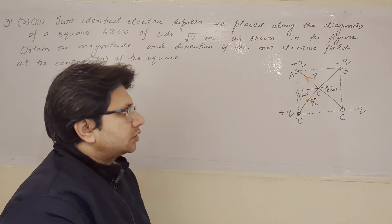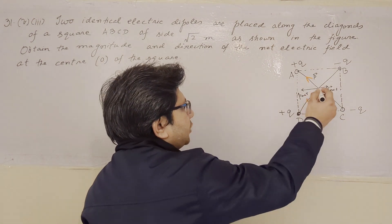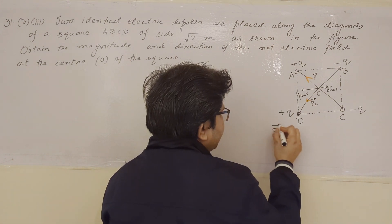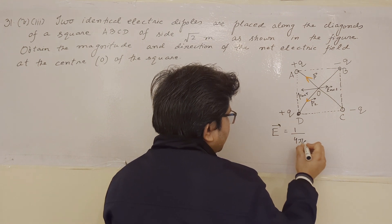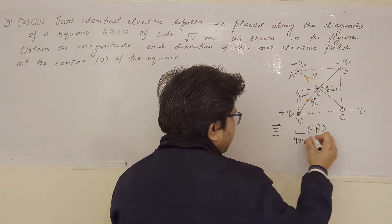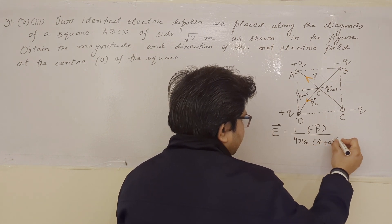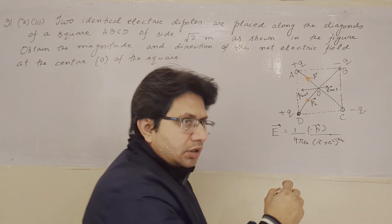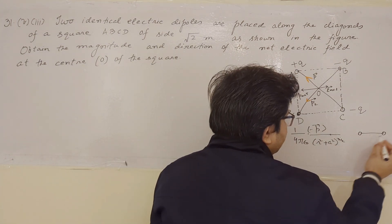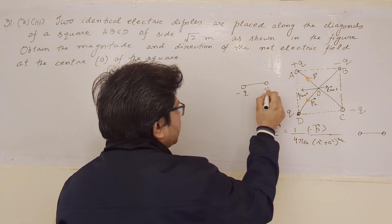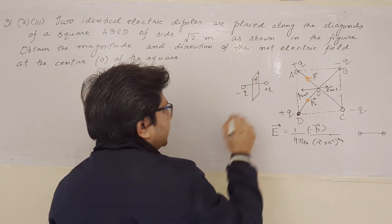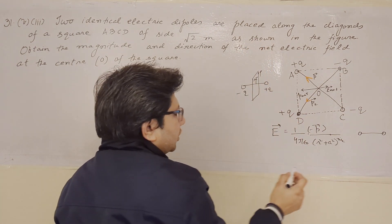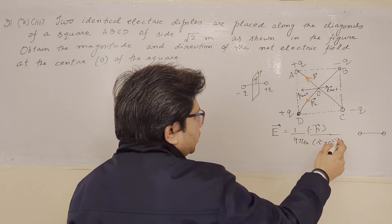The basic strategy to solve this problem is: first, find the net dipole moment corresponding to both dipoles. Then use the formula for the electric field in terms of the dipole, which is E equals one upon four pi epsilon naught, then minus P upon r squared plus a squared to the power three by two. This is the formula to calculate the electric field due to a dipole at the equatorial position. For the equatorial position, suppose the dipole has minus q and plus q, and the point is at a distance r. If the dipole is short or the point is very far away, the formula reduces to r cubed.